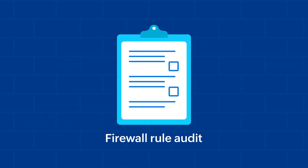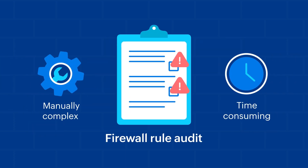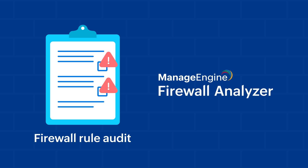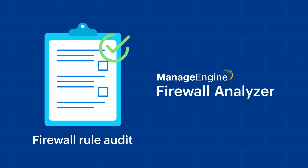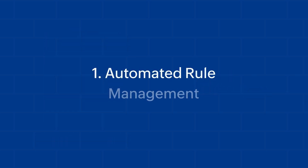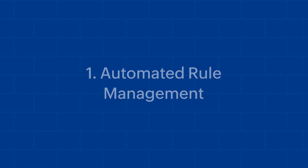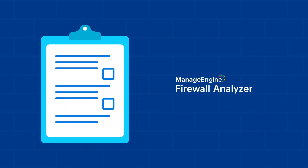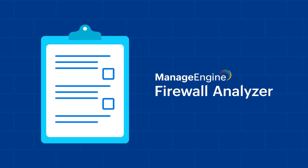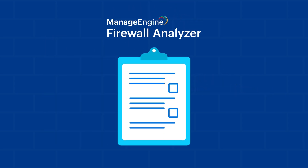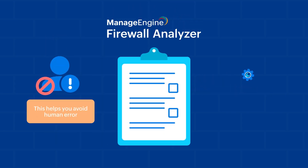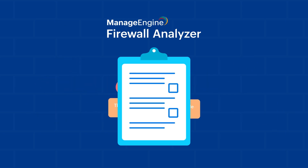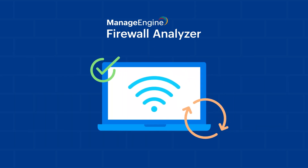Auditing your firewall manually can be complex and time consuming. But with ManageEngine's Firewall Analyzer, this process becomes easier and more efficient. Here's how: automated rule management. Instead of manually adding, modifying, or deleting rules, Firewall Analyzer automates the entire process. This helps you avoid human error, maintain a lean rule base, and ensure that changes are implemented seamlessly across all devices in your network.